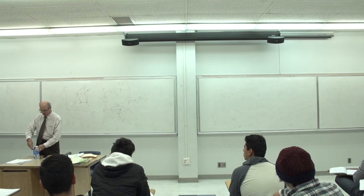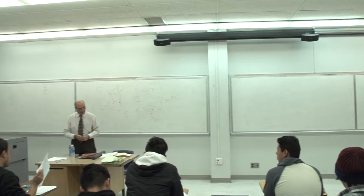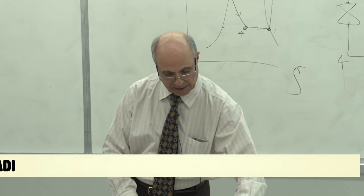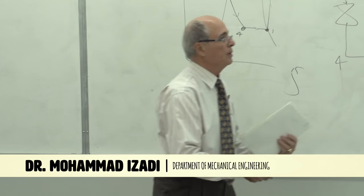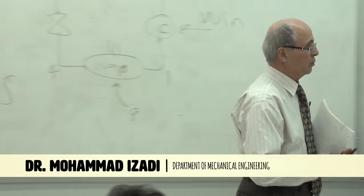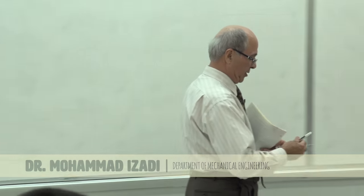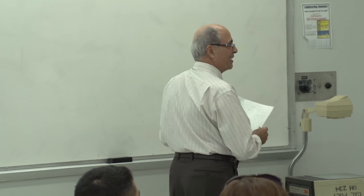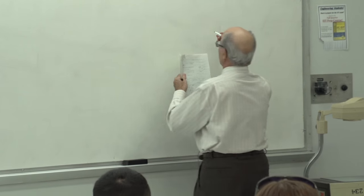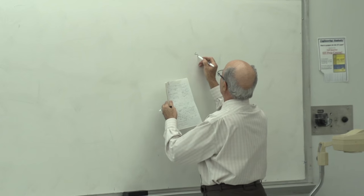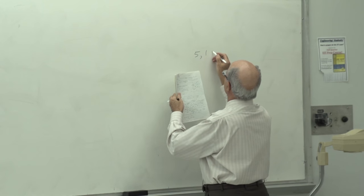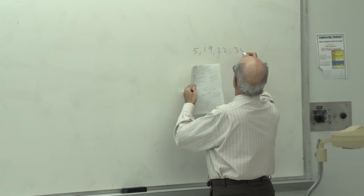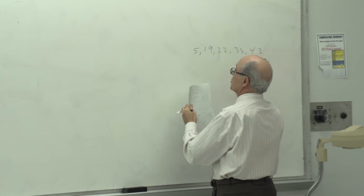I will ask whether you have any questions or not. This is for the next chapter, which is Chapter 4, Equilibrium of Rigid Body. The problem numbers are 5, 19, 22, 33, and 43, which are 2D problems.